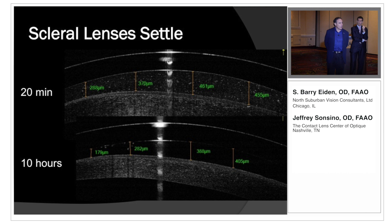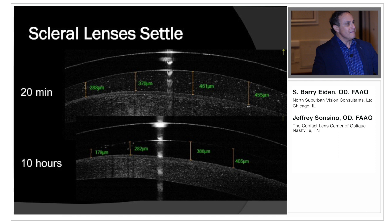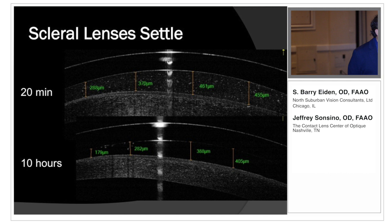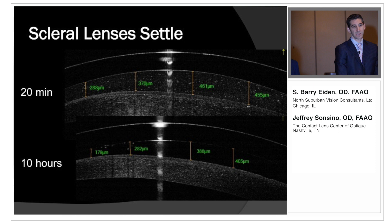Lens settling is something we all have to consider. You may observe a scleral lens and it looks exactly the way you want, but these lenses settle down 80–100 microns after a certain number of hours of wear. You need to predict that when first dispensing the lens and keep track of how many hours the lens has been worn when taking measurements. We're going to present at BCLA this year results of a clinical study on settling in vaulting hybrid lenses.